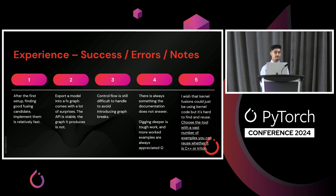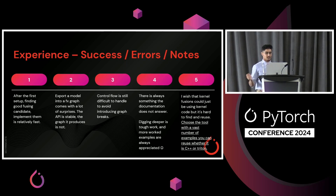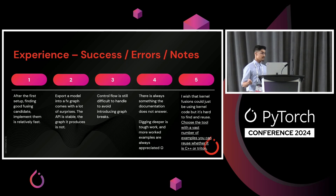The other thing we learned is that in this process, there's always something the documentation doesn't answer. It's not always straightforward to come to a solution, and even harder to find docs that tell us the best way to go about that. Digging deeper required a lot of tough work, and more examples are always appreciated — this is a call to everyone: when you come into experiences, try to share it with the community because people will benefit. Custom kernels are hard to find and hard to reuse. What worked really well for me was finding a tool I was most experienced with — C++ — and finding communities with examples.